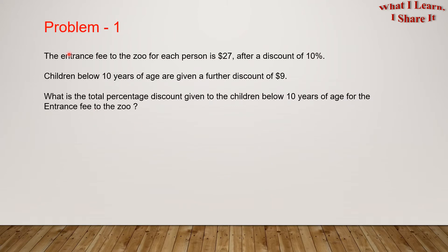Problem 1! The entrance fee to the zoo for each person is $27 after a discount of 10%. Children below 10 years of age are given a further discount of $9. What is the total percentage discount given to the children below 10 years of age for the entrance fee to the zoo?